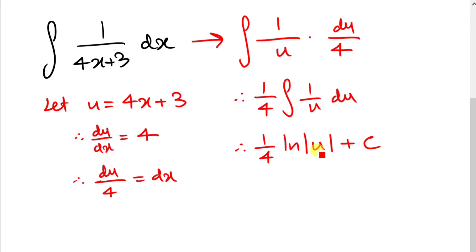And for u, we have to update it back to its original form, which is 4x plus 3. So our final answer is a quarter times ln of 4x plus 3, and then plus c. And that's it.